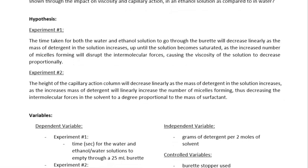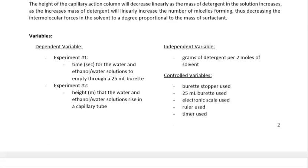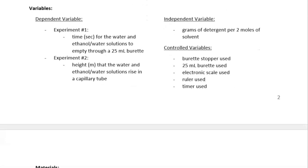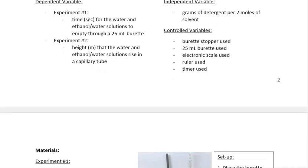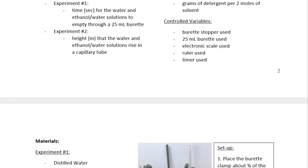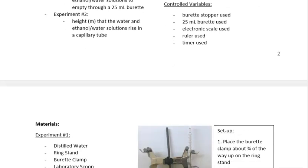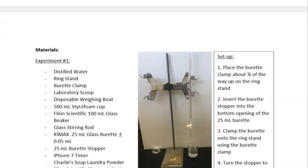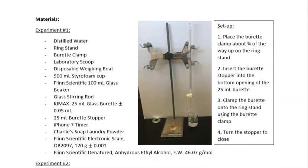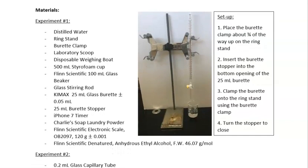The research question reads: 'How does increasing the concentration of a surfactant in a solution affect the disruption of hydrogen bonding shown through the impact of viscosity and capillary action in an ethanol solution as compared to water?' — fairly detailed. There are a couple of hypotheses for the different experiments. Variables are listed, which is really important. I usually like tables for this — independent, dependent, and controlled or extraneous variables, with uncertainties for each. Controlled variables should explain the degree to which you control them, not just state 'same glassware.'